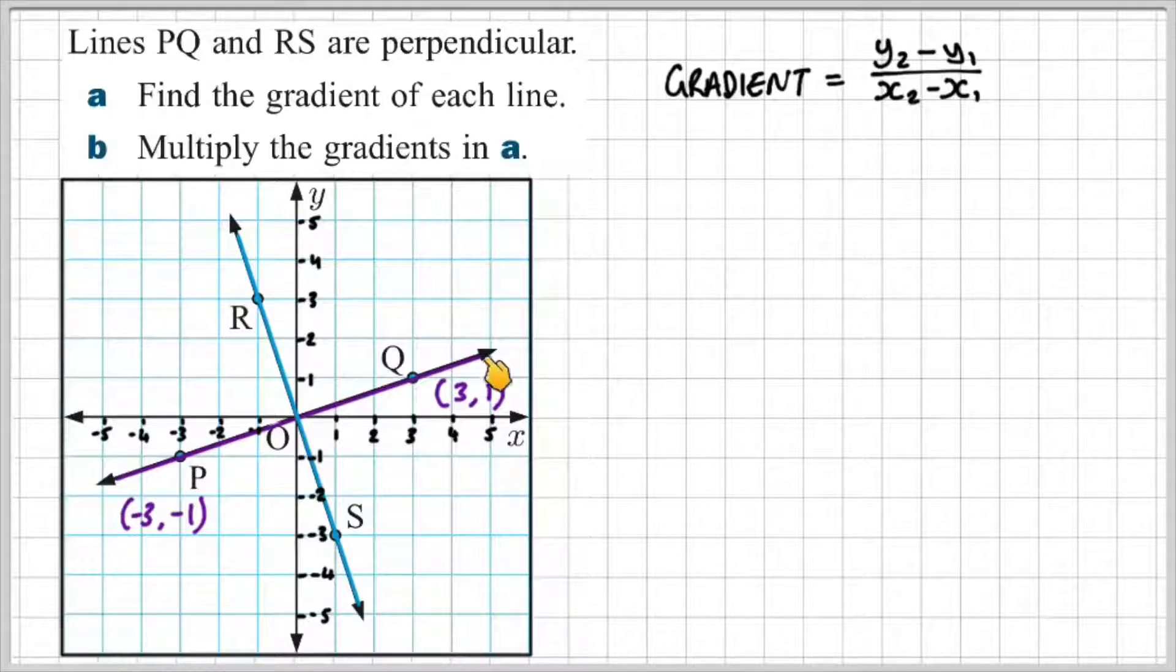We start off with the line PQ. We can see that we've got two coordinate points that they've given us. One is minus three comma minus one and then three comma one.